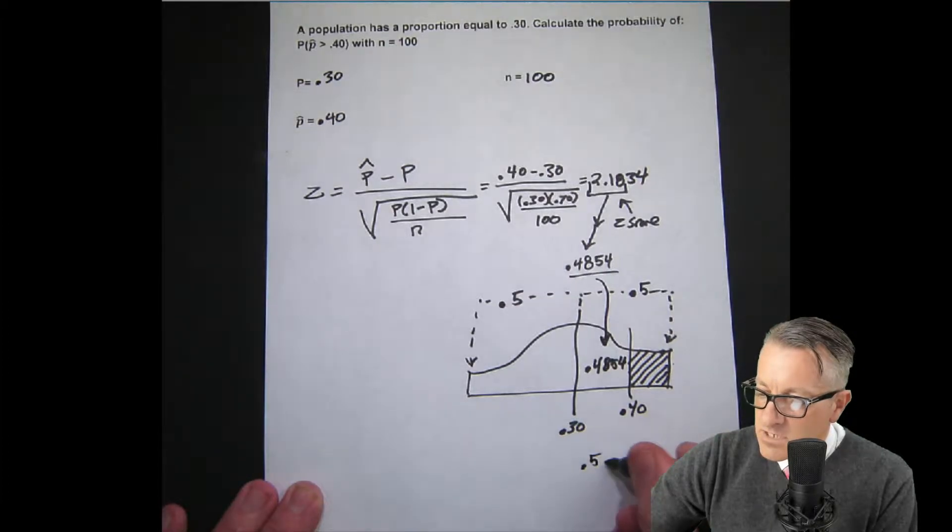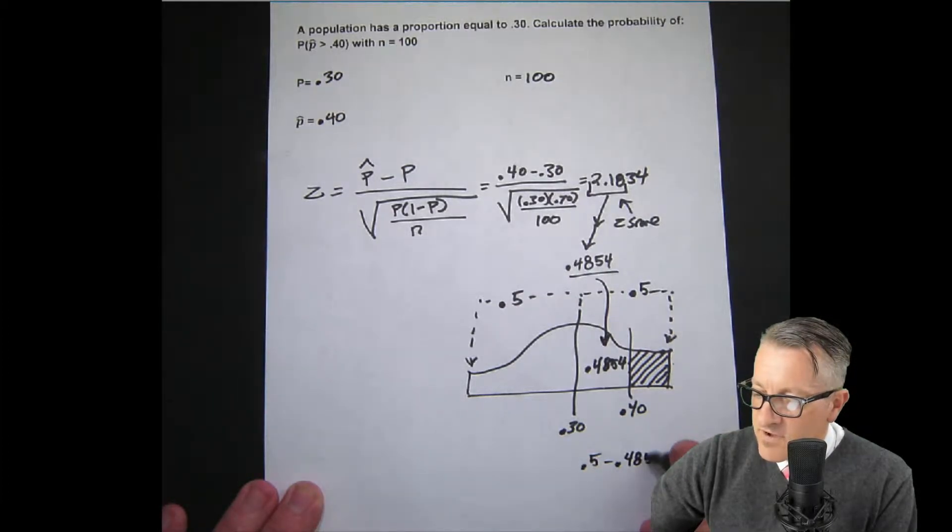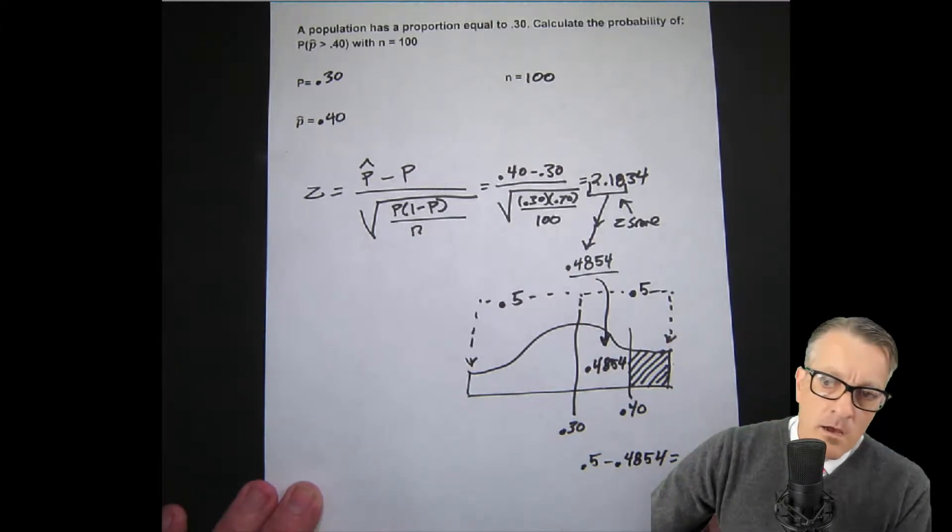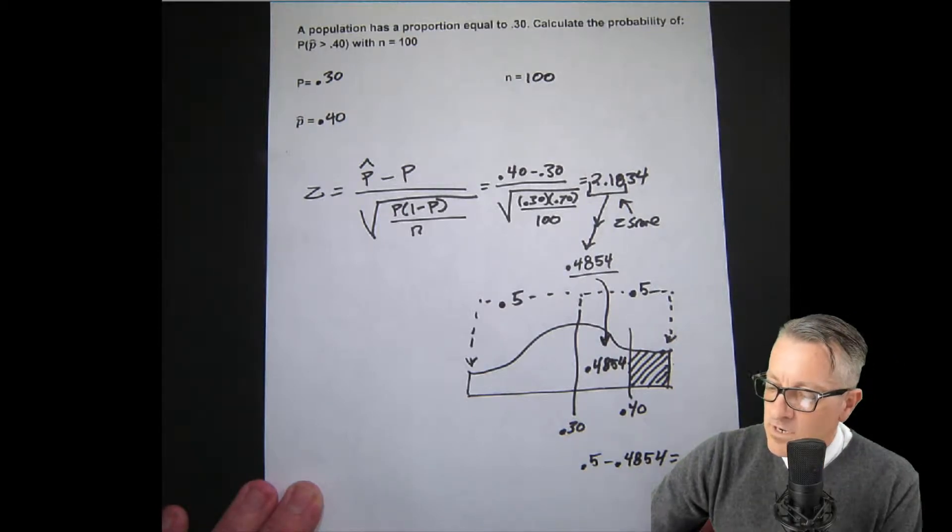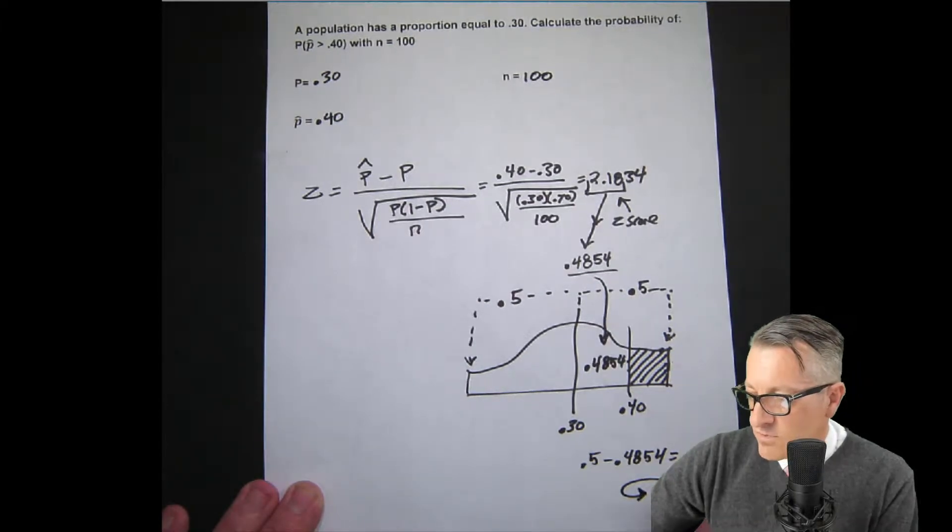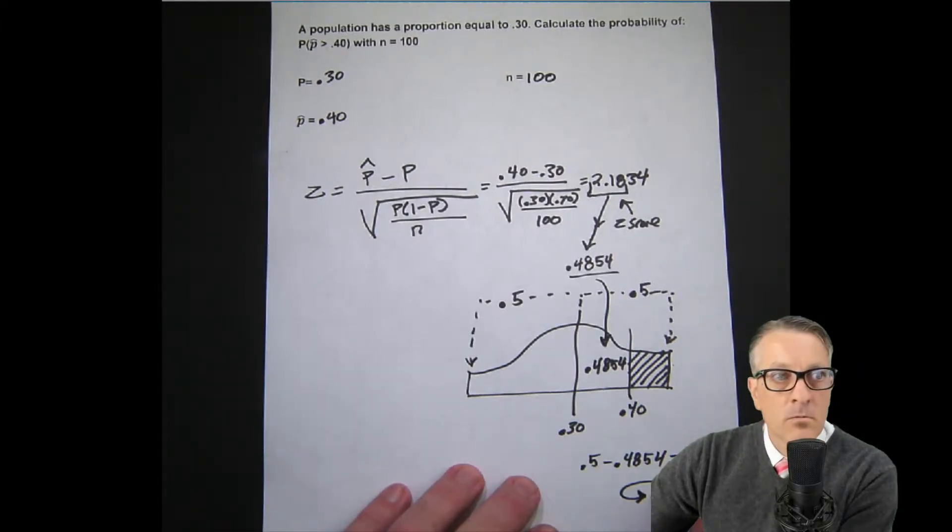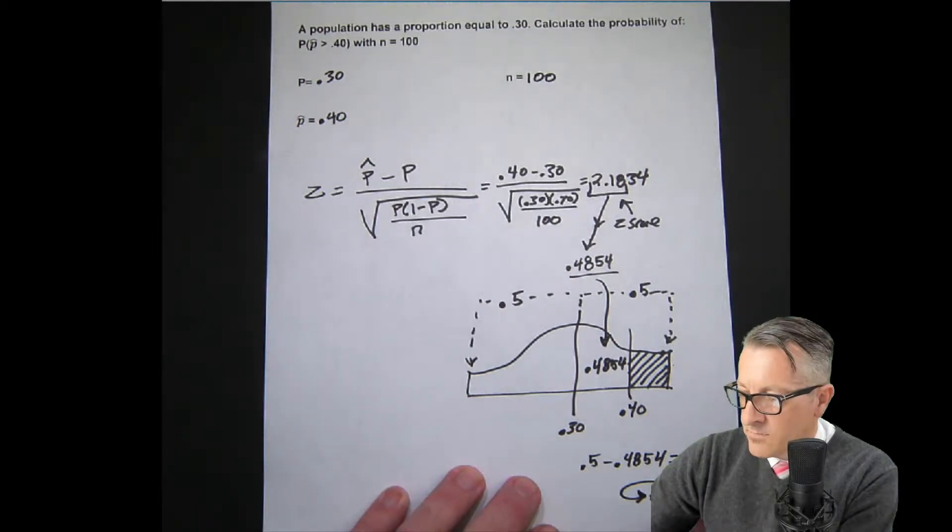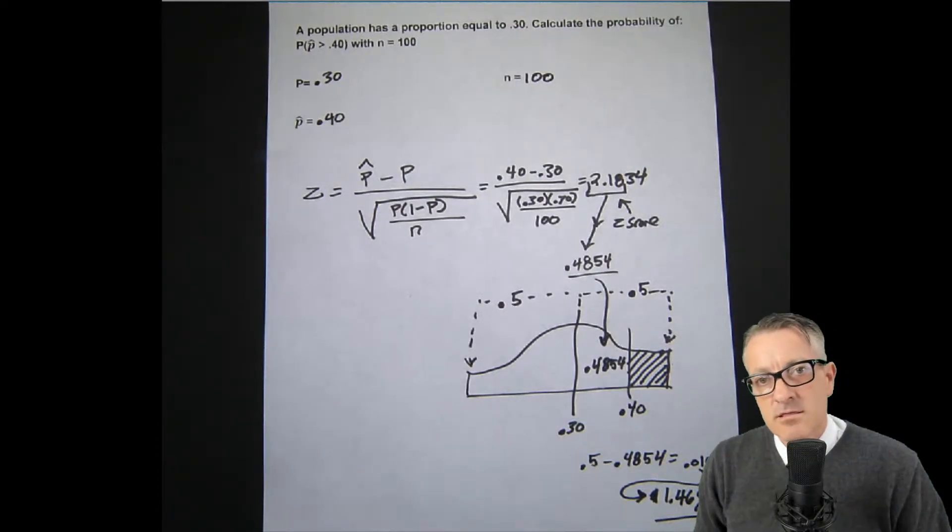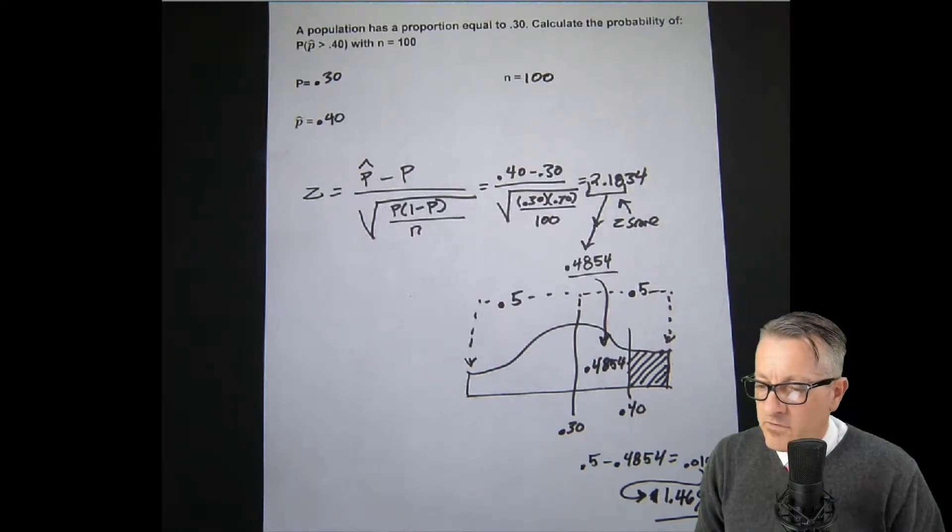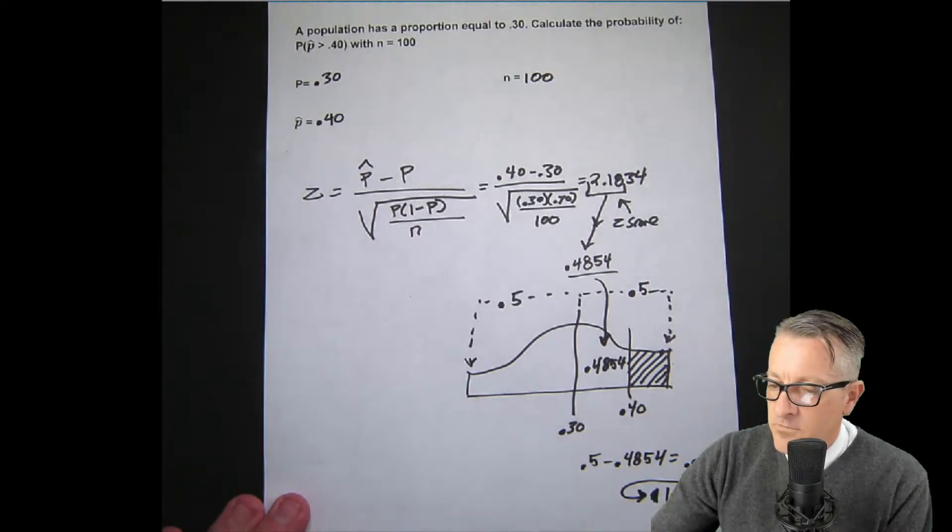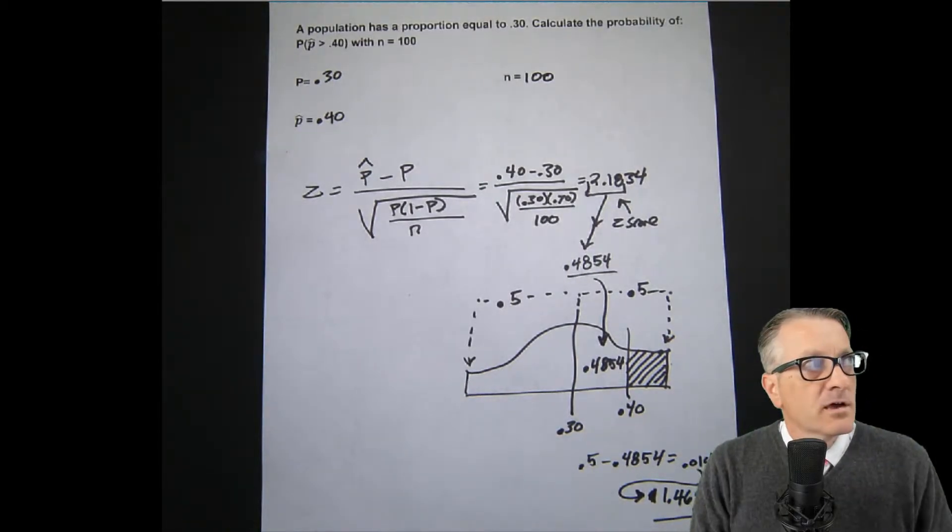We end up getting 0.0146, or written as a percentage it would be 1.46%. That would be the probability of getting a proportion greater than 0.40. Now let's do this on the calculator.